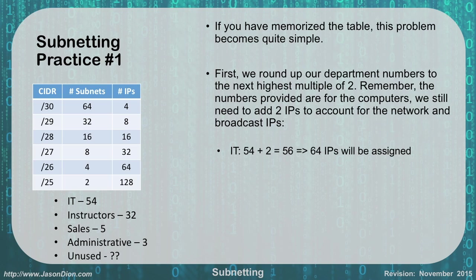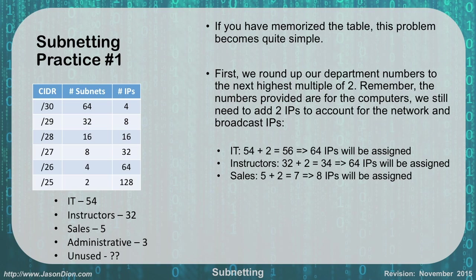Remember the two are for our broadcast and our network. For the instructors we have 32, so we add 2 to make it 34, which rounds up to 64 as well. So IT and instructors will both have the same number in their CIDR notation. For sales, 5 plus 2 gives us 7, which rounds up to 8 — that gives us the number of IPs assigned for that subnet.